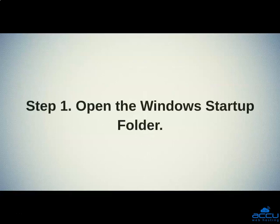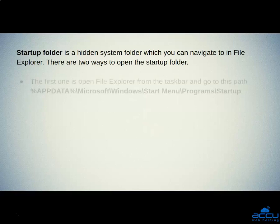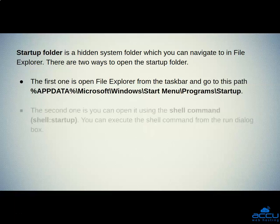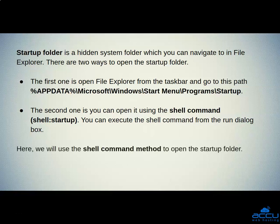Step 1: Open the Windows Startup folder. The Startup folder is a hidden system folder which you can navigate to in File Explorer. There are two ways to open the Startup folder. The first one is to open File Explorer from the taskbar and go to the path. The second one is to open it using the shell command, which you can execute from the Run dialog box. Here, we will use the shell command method to open the Startup folder.